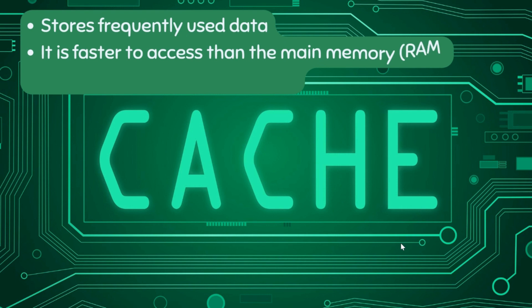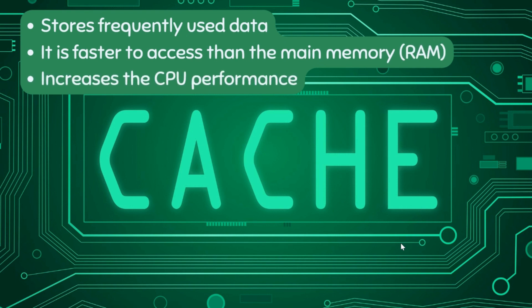Now let's look at the cache. The cache stores frequently used data. The reason we have the cache instead of storing everything in RAM is because the cache is much faster to access than the main memory. It has a very small storage capacity, but if you're only accessing frequently used data, it will be much quicker than RAM, and this increases the performance of the CPU.